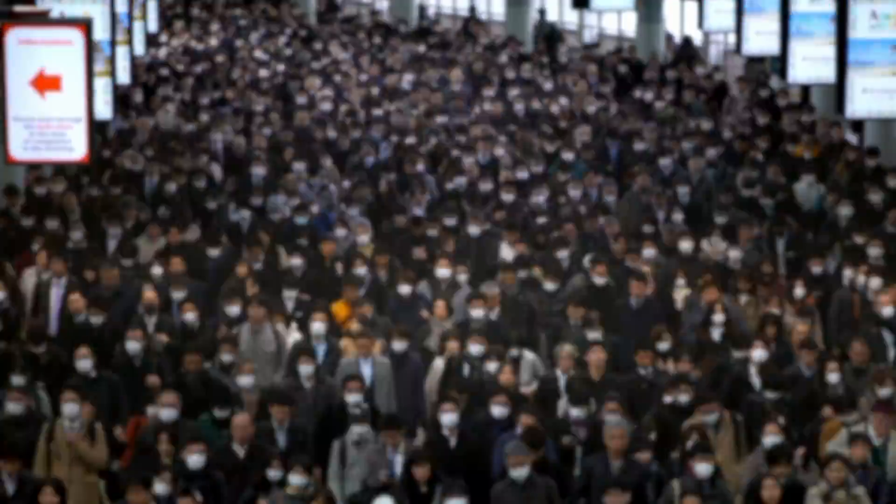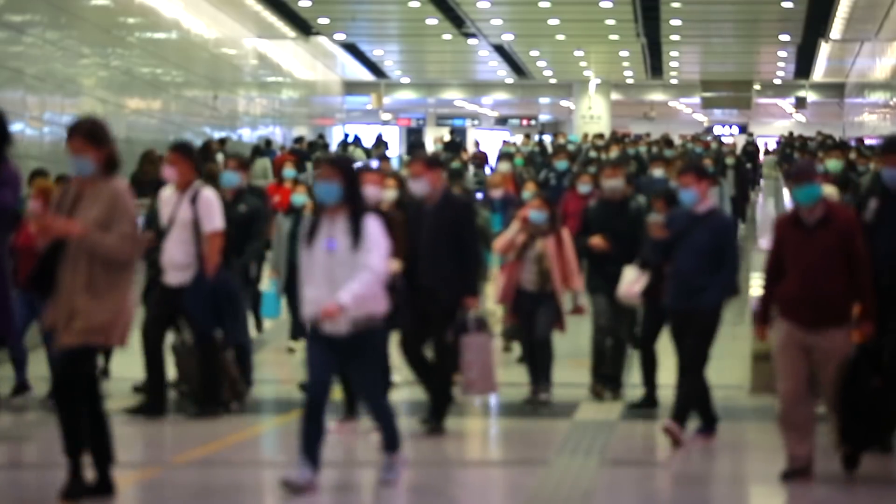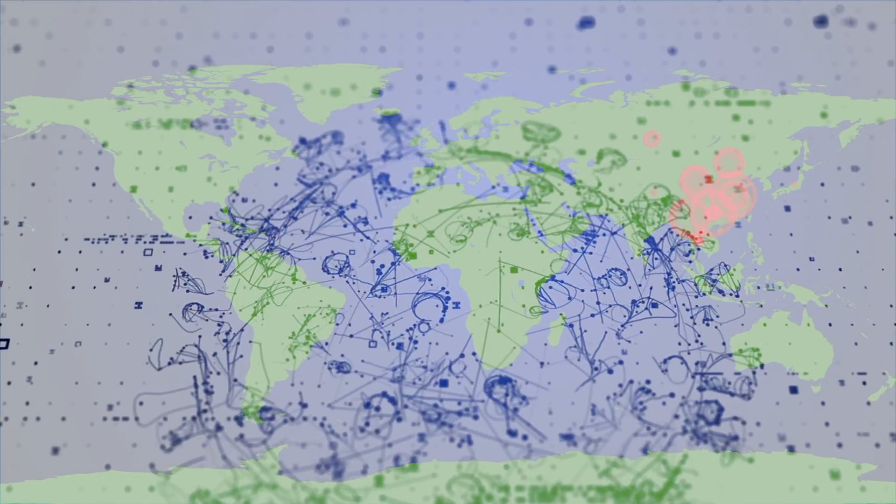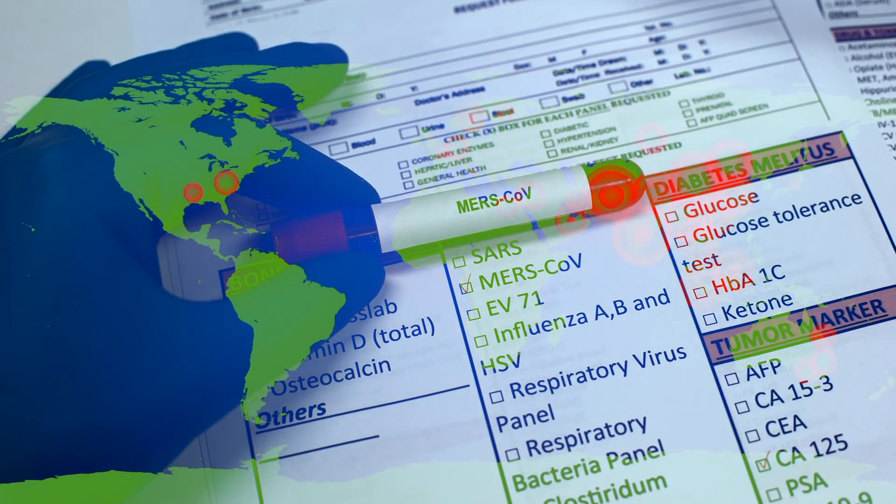Detecting the virus in the early stages and in asymptomatic carriers could indeed be game-changing in halting its progress. Getting more tests out to as many people as possible, as soon as possible, could provide the data needed to accurately track the virus.